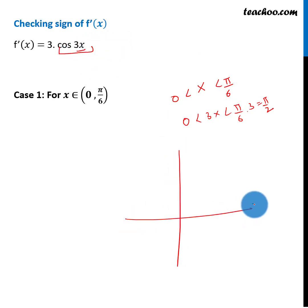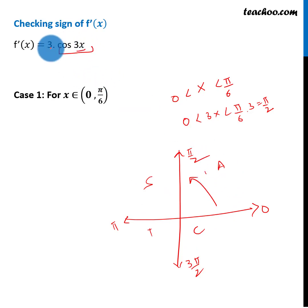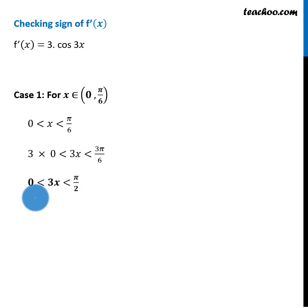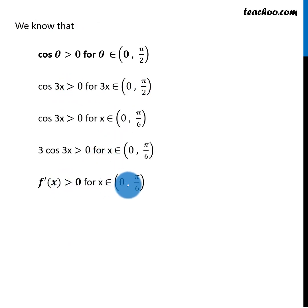Let's check the sign on the unit circle. At 0, pi by 2, pi, and 3 pi by 2 — in the first quadrant from 0 to pi by 2, all cosine values are positive. So cos(3x) is positive, and since 3 is a constant, f'x is positive — that is, greater than 0 — for this interval.